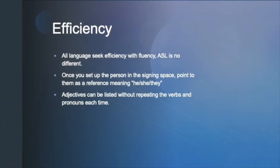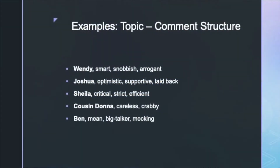All languages seek efficiency with fluency, and ASL is no different. Once you set up the person in the signing space, you can just point to them as a reference, and your index finger pointing means he, she, or they. Also, adjectives can be listed without repeating the verbs and pronouns each time. I will demonstrate the following examples of listed adjectives.